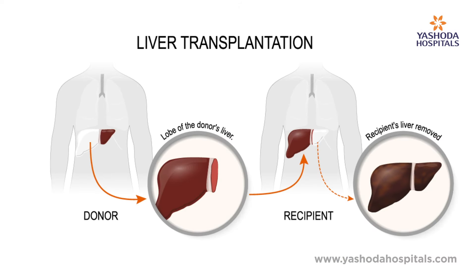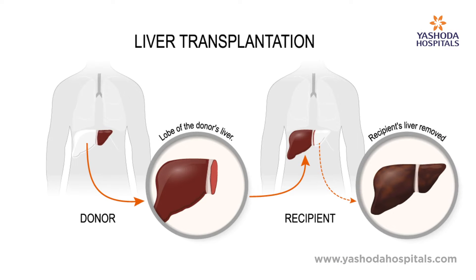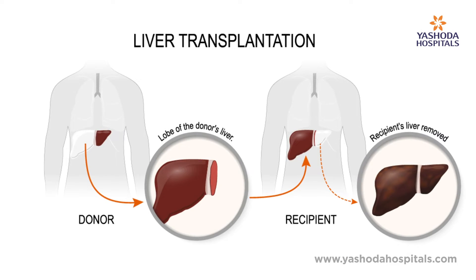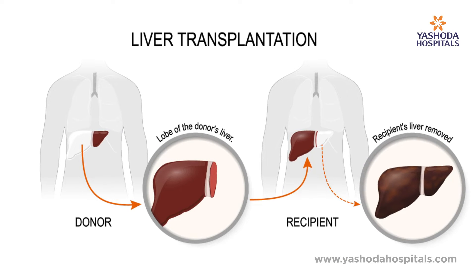In live-related liver transplant, one of the family members volunteers to give part of his liver to the patient. In cadaver liver transplant, it is the organ which comes from a brain-dead patient through the organ allocation team.